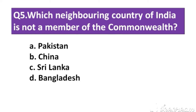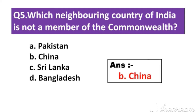Question number 5: Which neighboring country of India is not a member of the Commonwealth? Option A: Pakistan. Option B: China. Option C: Sri Lanka. Option D: Bangladesh. The right answer is Option B: China.